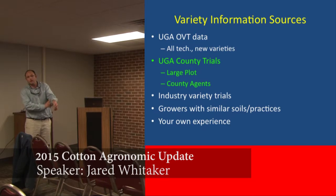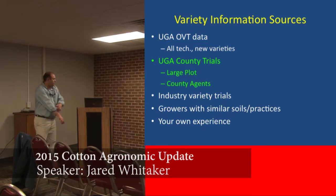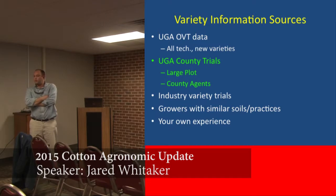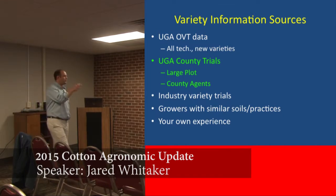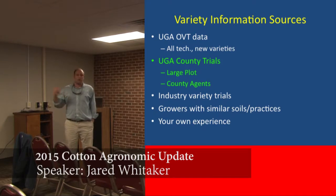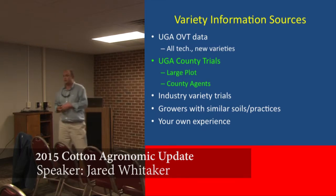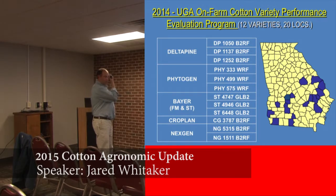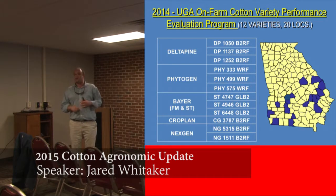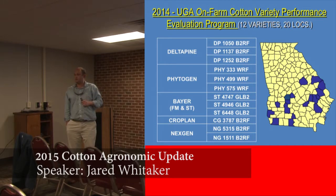What I'll share with you today is information from our county trial program. That program consists of basically a program that me and the other cotton agronomists started about four years ago, where we tried to look at variety performance over a large number of locations. We tried to get a set of varieties available from seed companies — ones you guys are going to be able to plant the next year, ones that have proven good performance in the past — and basically plant that set of varieties over a large number of locations. It gives us an opportunity to look at real-world, on-farm data, and see how varieties perform over a bunch of different environments. If you know Georgia weather, it can rain an inch on one farm and not at all nearby — it's extremely variable.